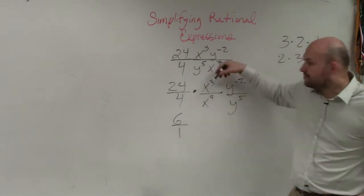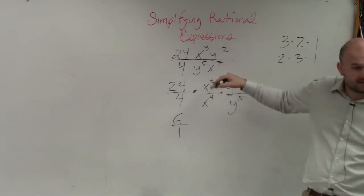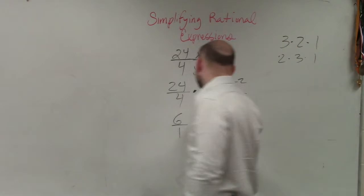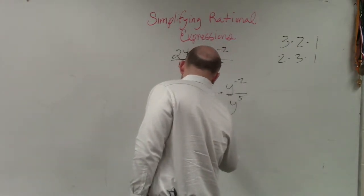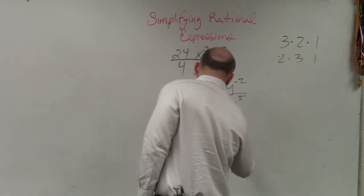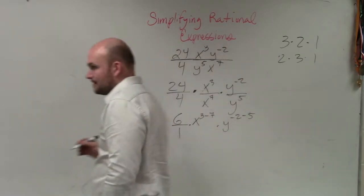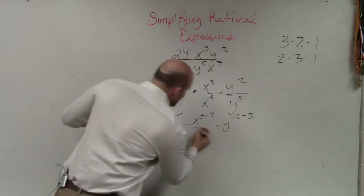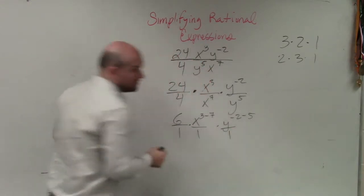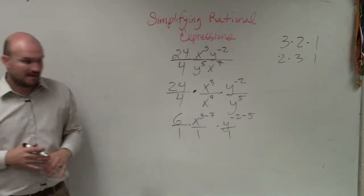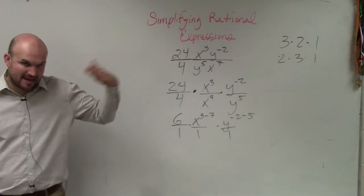The next thing, remember how we showed this. This is going to become x to the 3 minus 7 times y to the negative 2 minus 5. Now, remember, those are all represented in the numerators. When you subtract them, you're subtracting them as in the numerator.